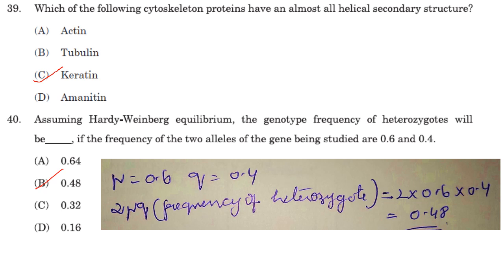Which cytoskeleton protein has an almost entirely helical secondary structure? It is keratin. Microtubules and microfilaments are helical structures of tubulin and actin subunits, while intermediate filaments such as keratin and lamins have extended secondary helical structures.